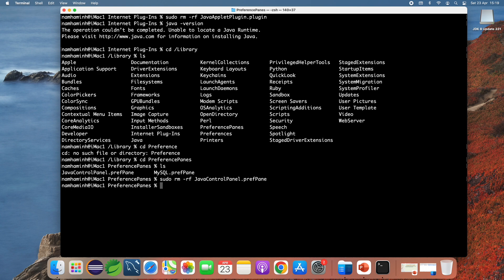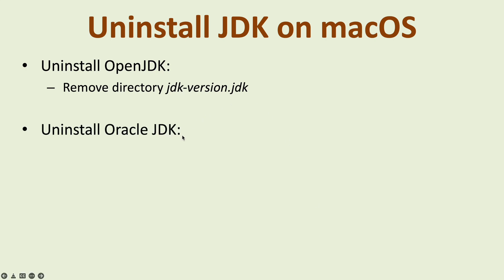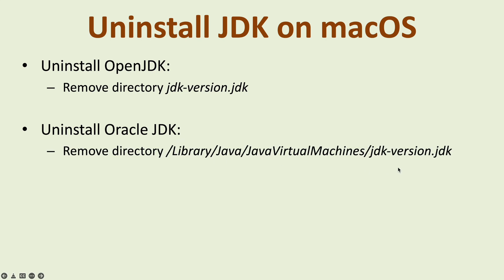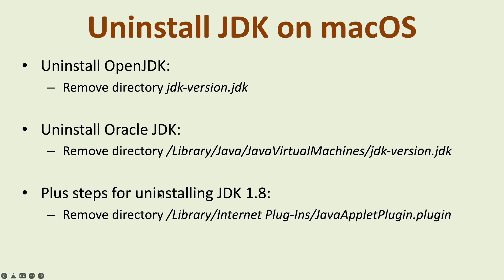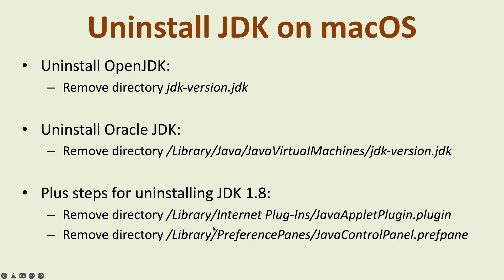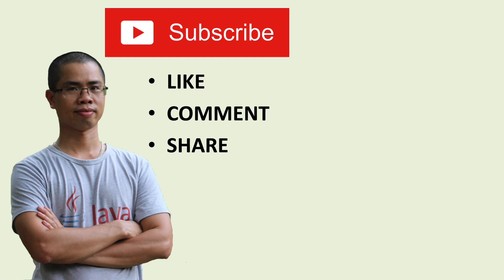Type 'sudo rm -rf Java Control Panel' — done. So that's how to uninstall JDK on macOS. For OpenJDK, you just need to remove the JDK version directory. For Oracle JDK, remove the JDK version directory under Library/Java/JavaVirtualMachines. With JDK 1.8, also remove the Java Applet Plugin under Library/Internet Plugins and the Java Control Panel under Library/PreferencePanes. I hope you found this video helpful — please subscribe, like, comment, and share. Thanks for watching!